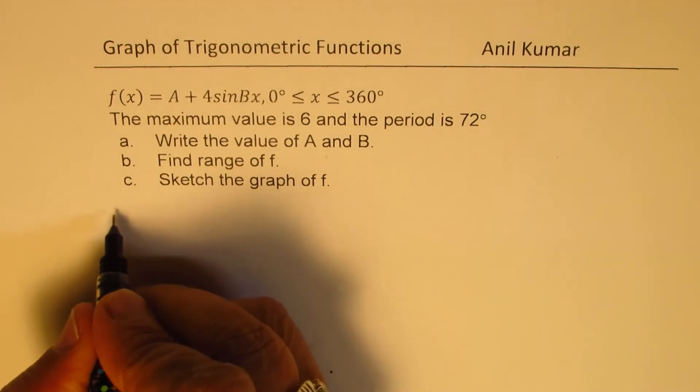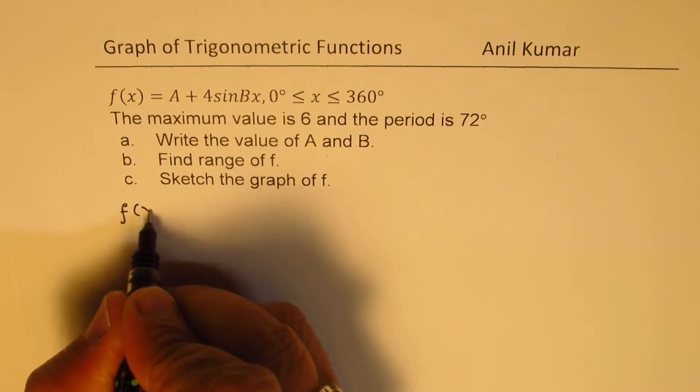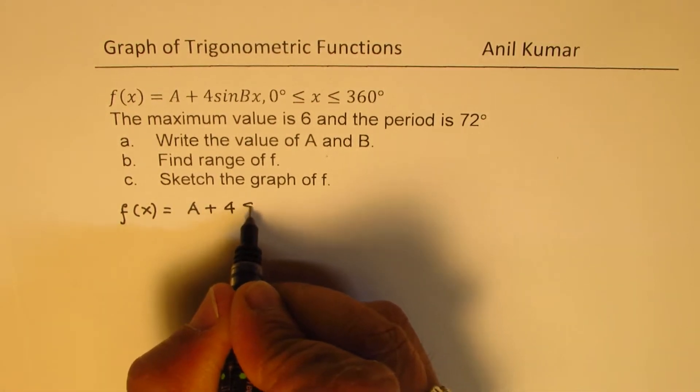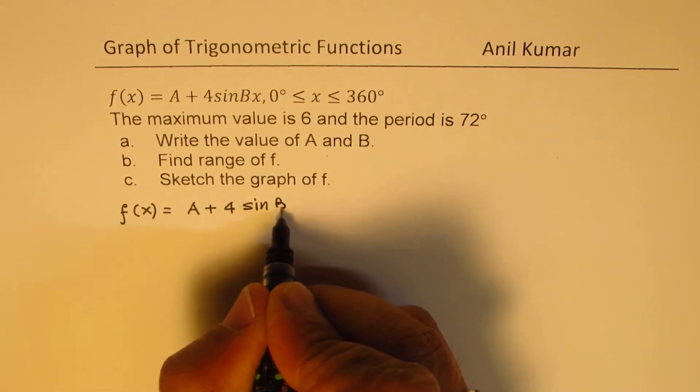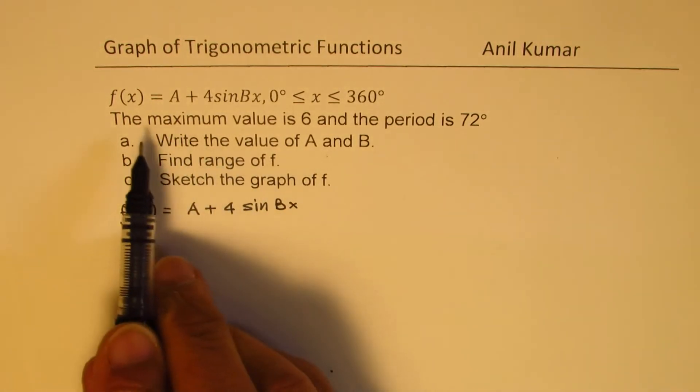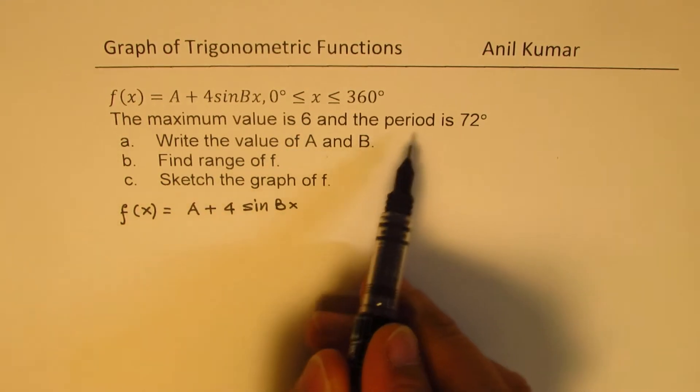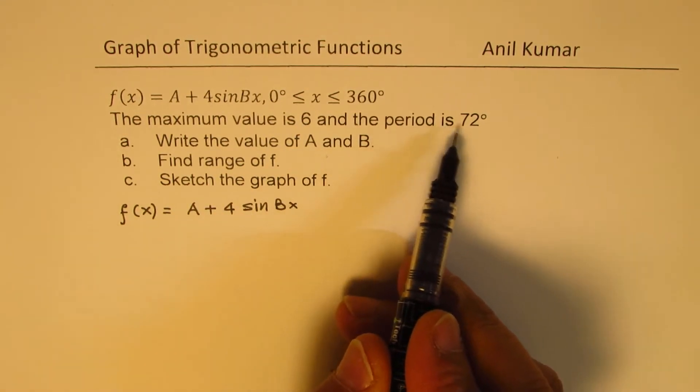Okay, let's rewrite the equation, which is f(x) is equal to A plus 4 sin Bx. We are given the maximum is 6, and the period is 72.